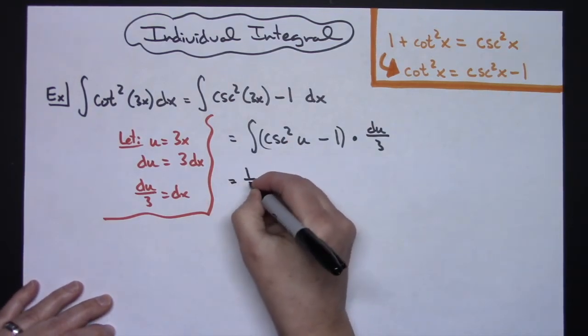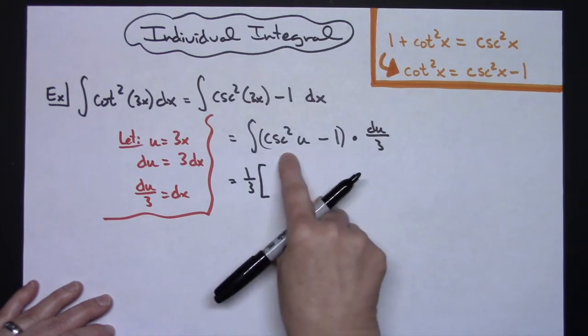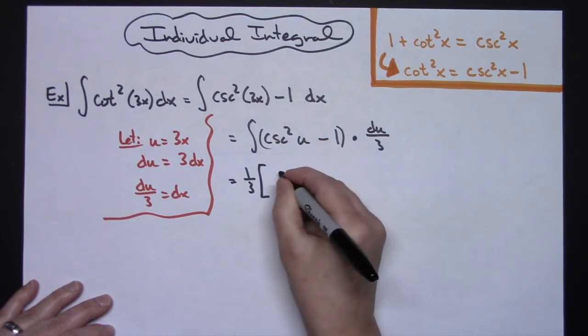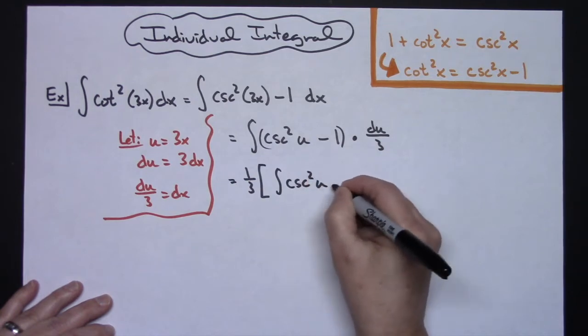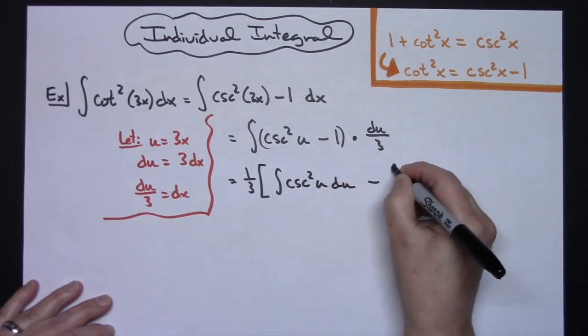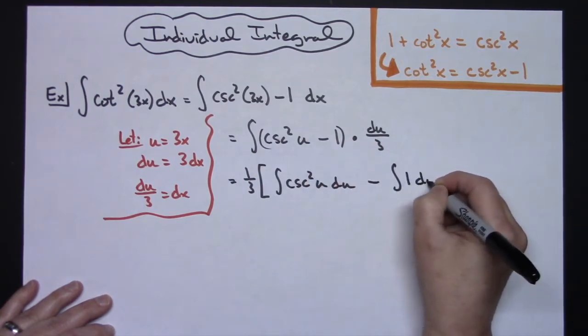So I'm going to have a 1 3rd pulled out in front. Then I'm going to break this up into two separate integrals. So I'll have the integral of a cosecant squared u du minus the integral of a 1 du.